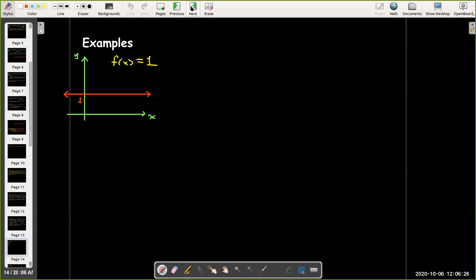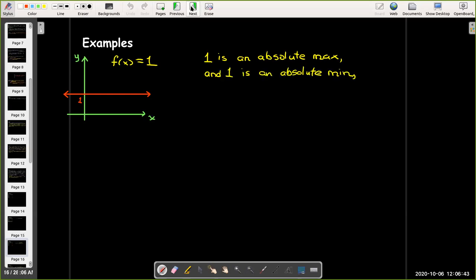Let's look at a couple of examples. Here we have a constant function f(x) equals 1. Since it always has the same function value, the same y-coordinate, then that one y-coordinate, the number 1, is an absolute max. It's also an absolute min. It's also a local max. It's also a local min.